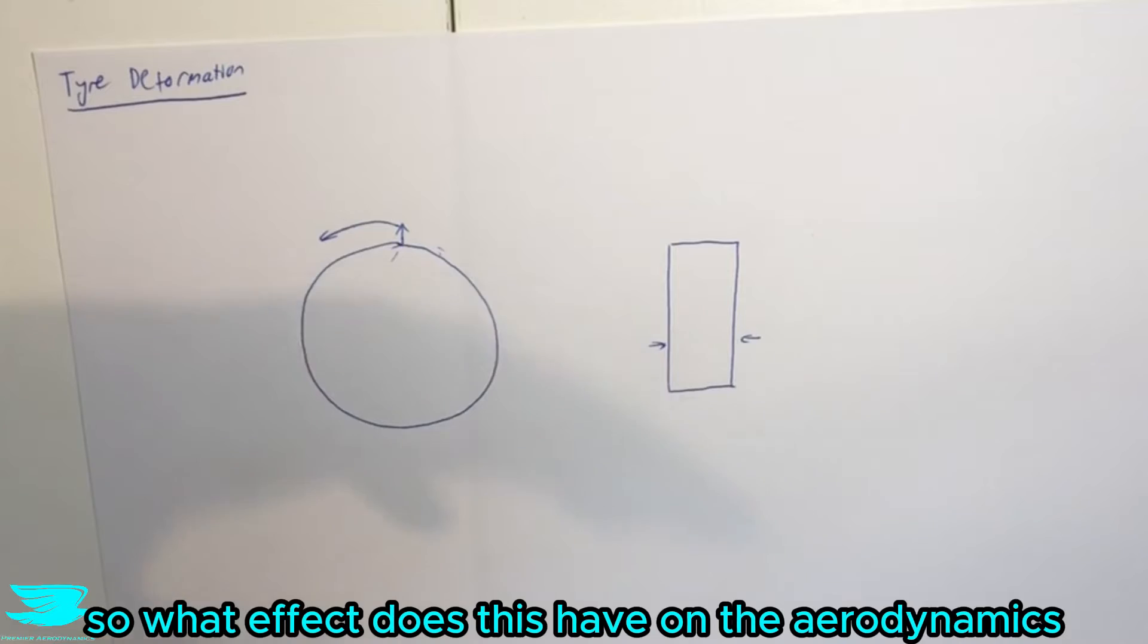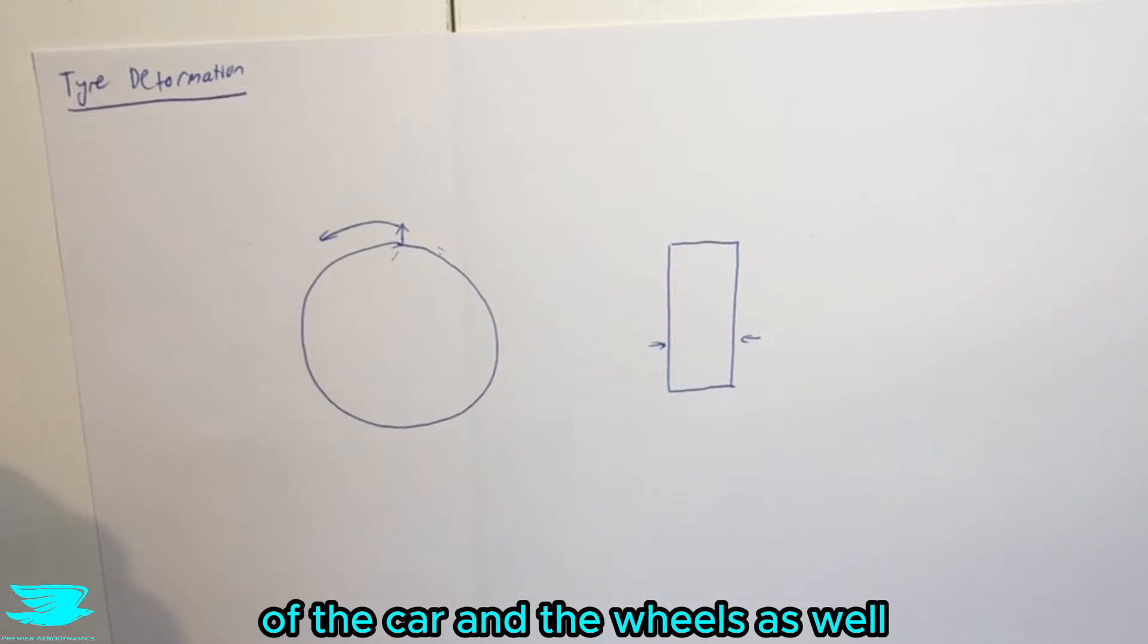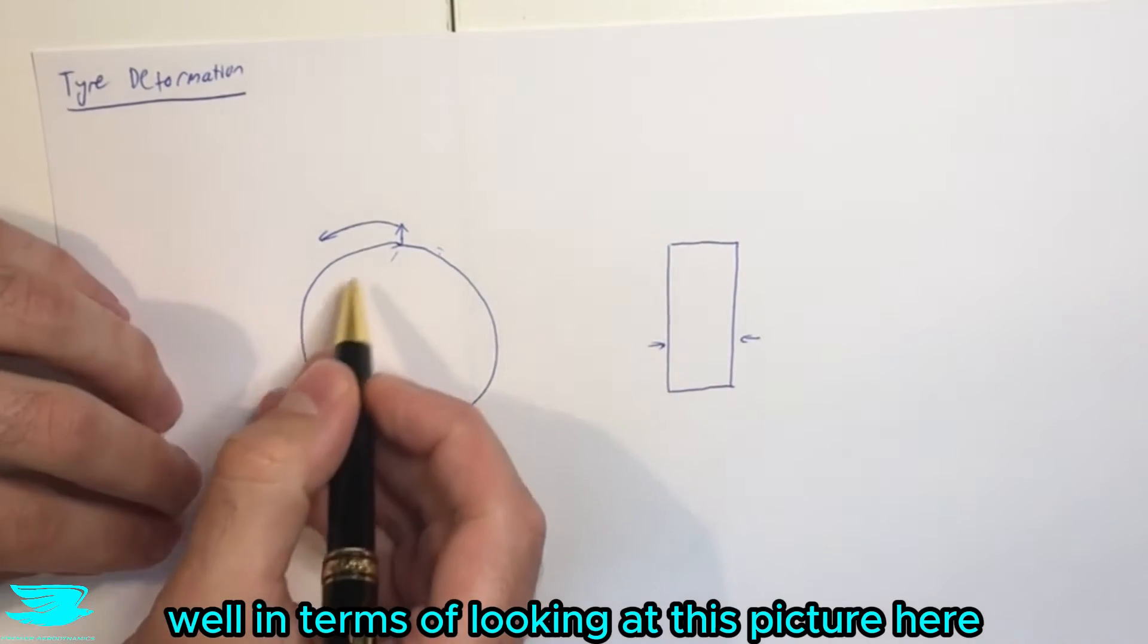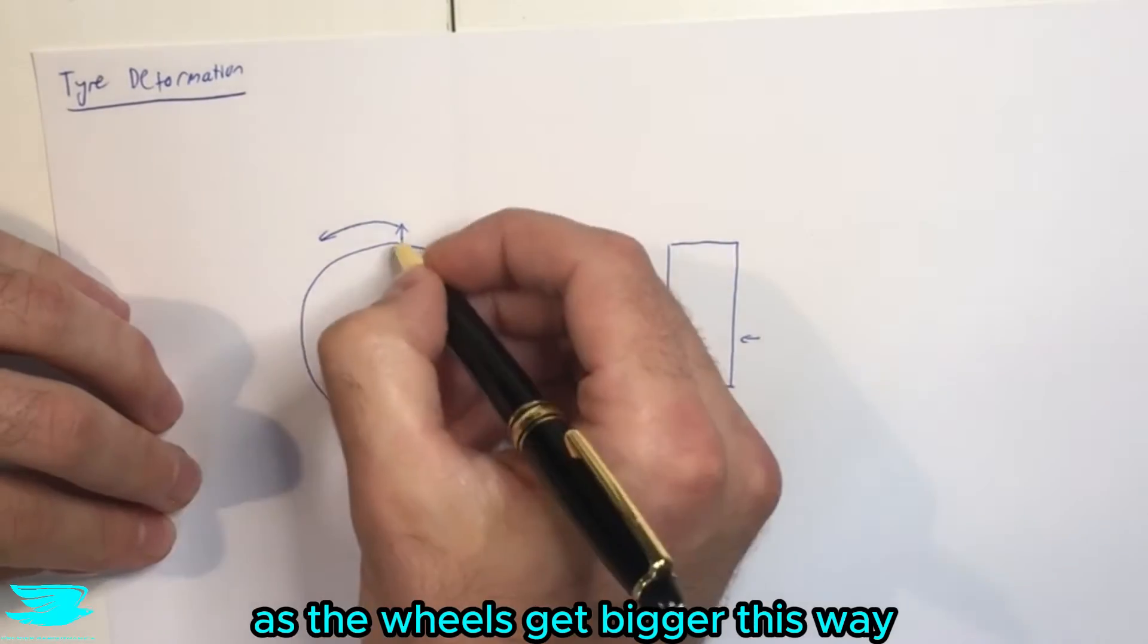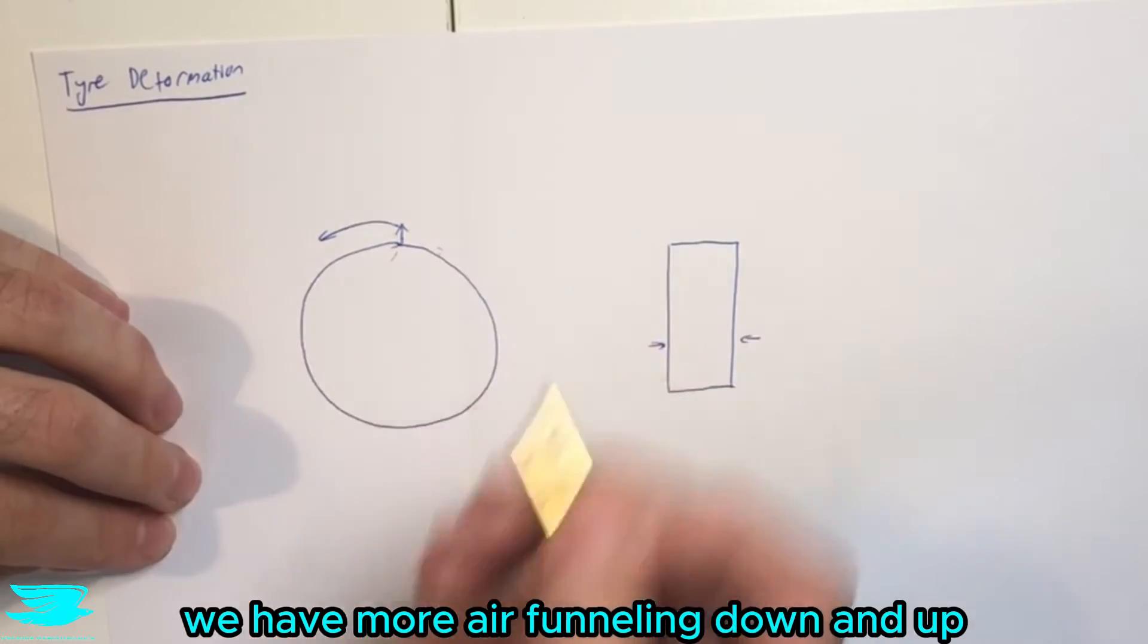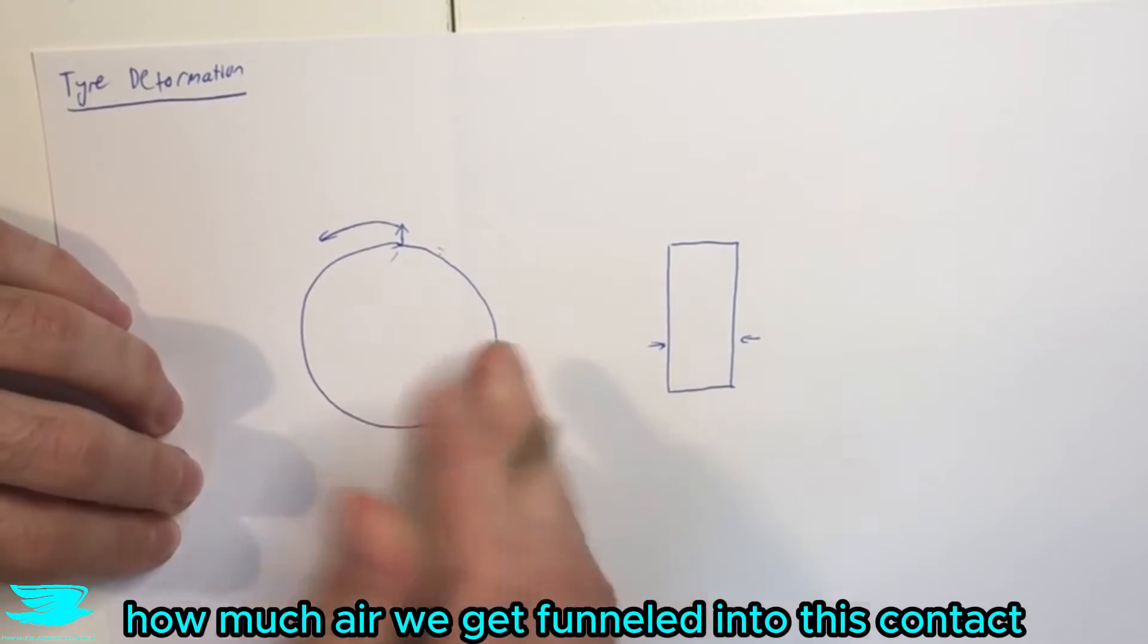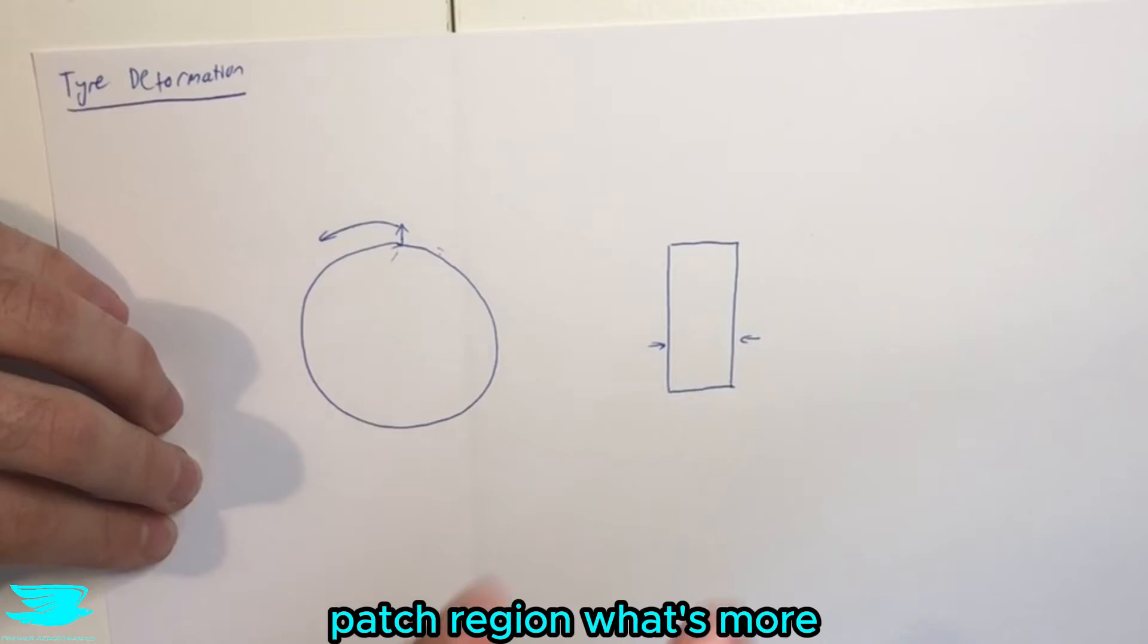So what effect does this have on the aerodynamics of the car and the wheels as well? Well, in terms of looking at this picture here, as the wheels get bigger this way, we have more air funneling down and up, so this changes how much air we get funneled into this contact patch region. What's more,